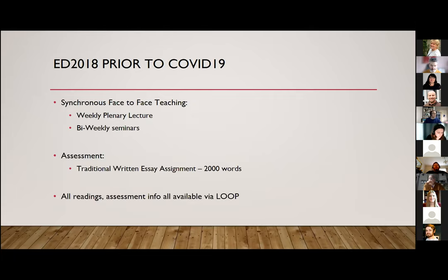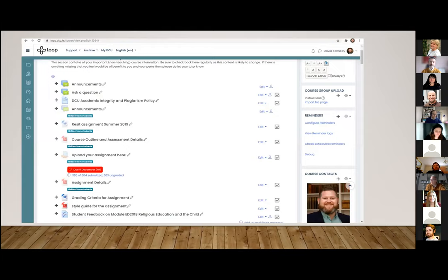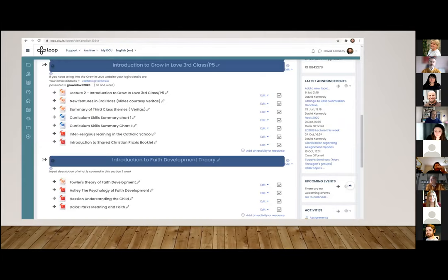Prior to COVID, the module was run in a very traditional fashion. It was synchronous face-to-face teaching with weekly plenary lectures with the 400 group, and then bi-weekly seminars where we broke down that 400 group to about 30 students per seminar session. The assessment was a traditional academic assignment of 2,000 words, and all readings and assessment information were available via Moodle, but in a very uncoordinated fashion — the material was just kind of dumped there. Whilst we had headings per lecture topics, there was still a disheveled look to the page, but that was perfectly fine as it was merely a point of reference rather than the central learning environment.